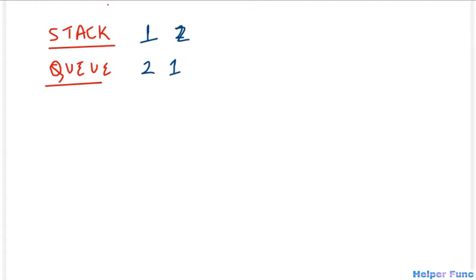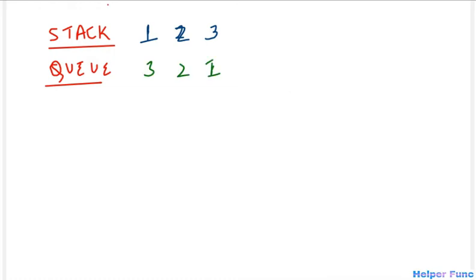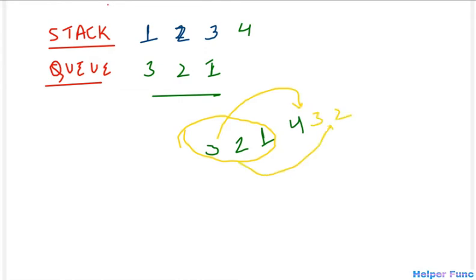Now if I need to push three, the queue has two and one. I push three, then pop all elements before it and push them back. First two is popped and pushed back, then one is popped and pushed back, giving us three, two, one. Similarly, to push four we start with three, two, one, push four, then pop three, two, and one in sequence and push each back. The queue becomes four, three, two, one. Now if I want to pop from this stack I simply call queue.pop and the sequence is four, three, two, one — exactly like a stack.